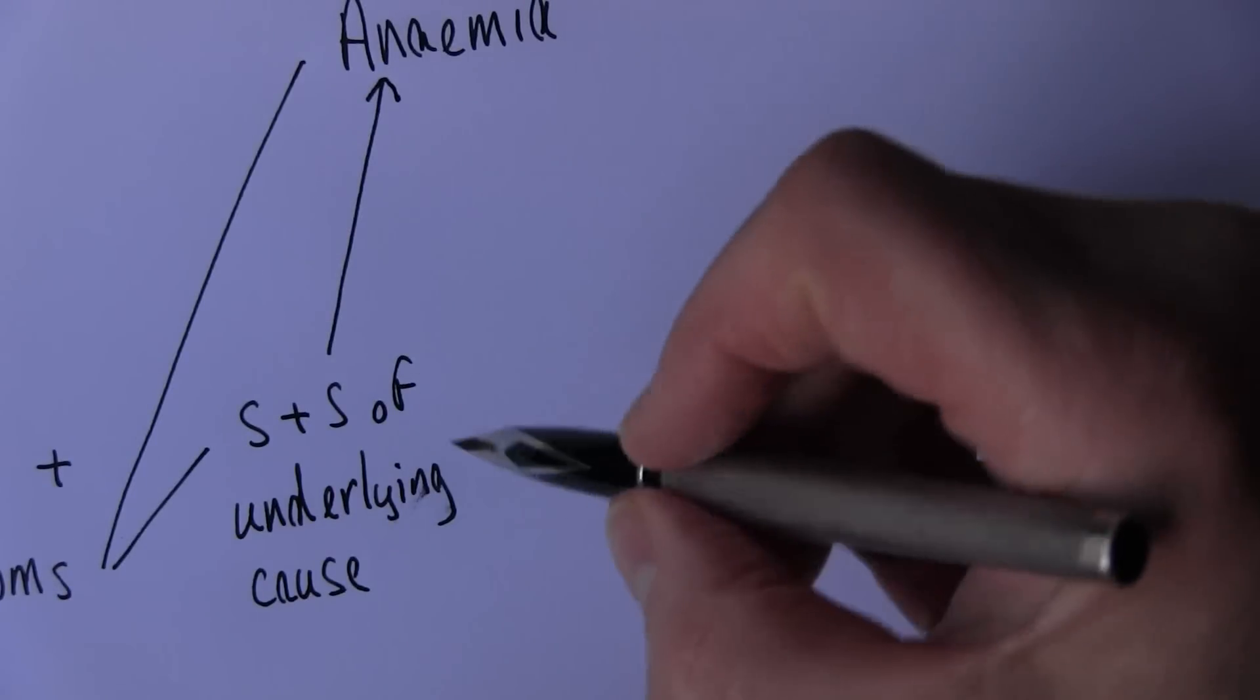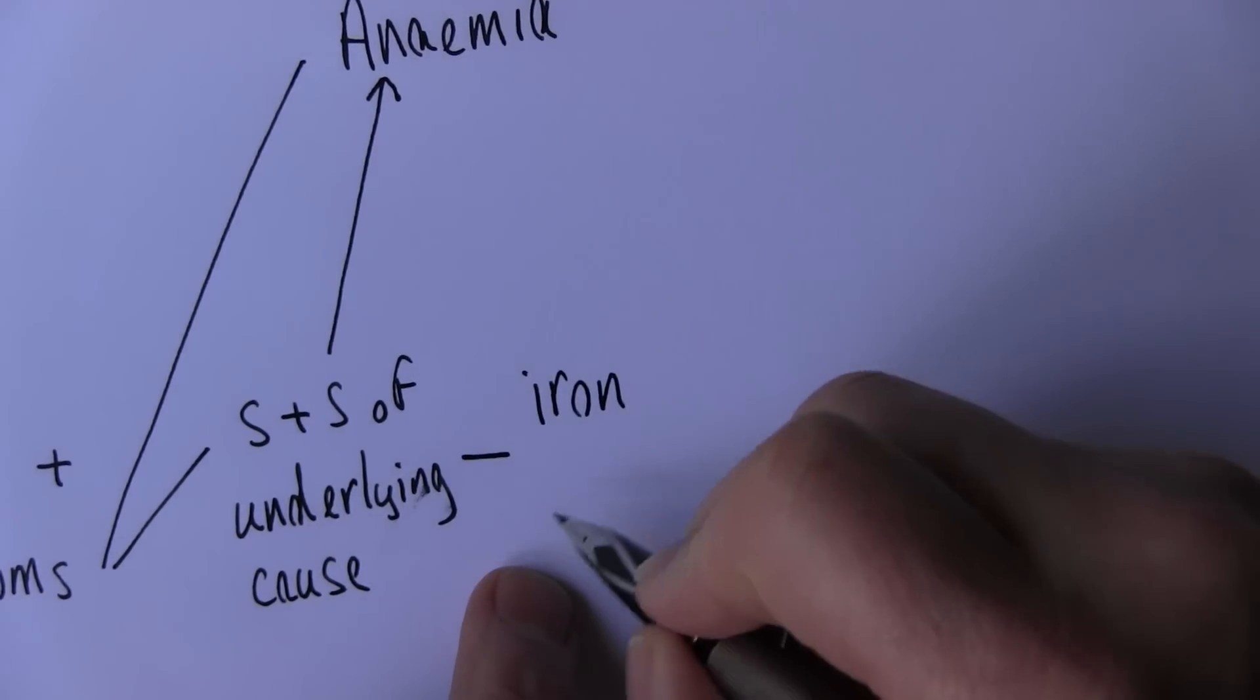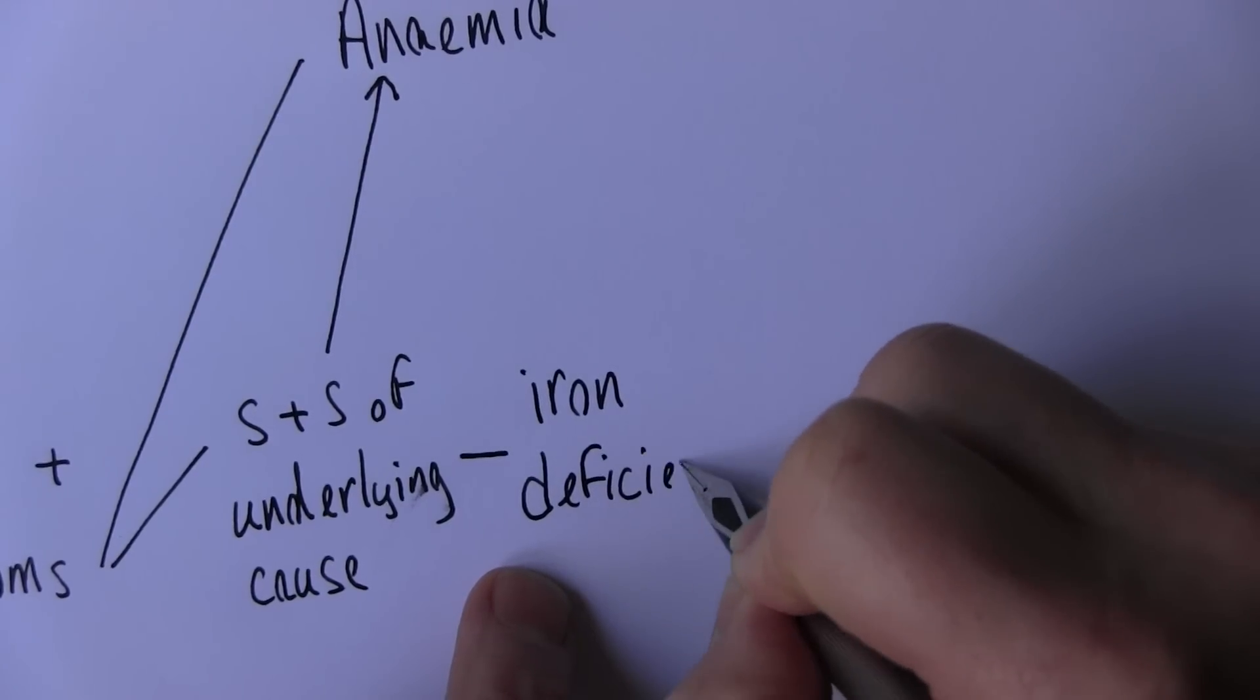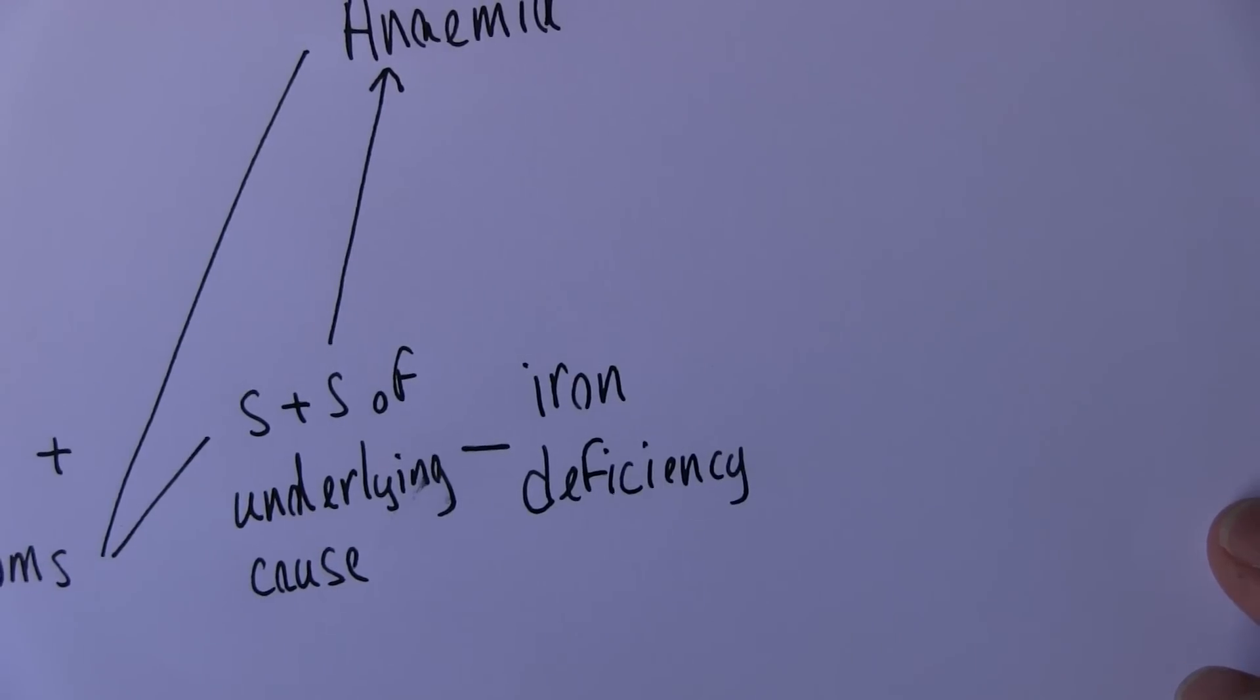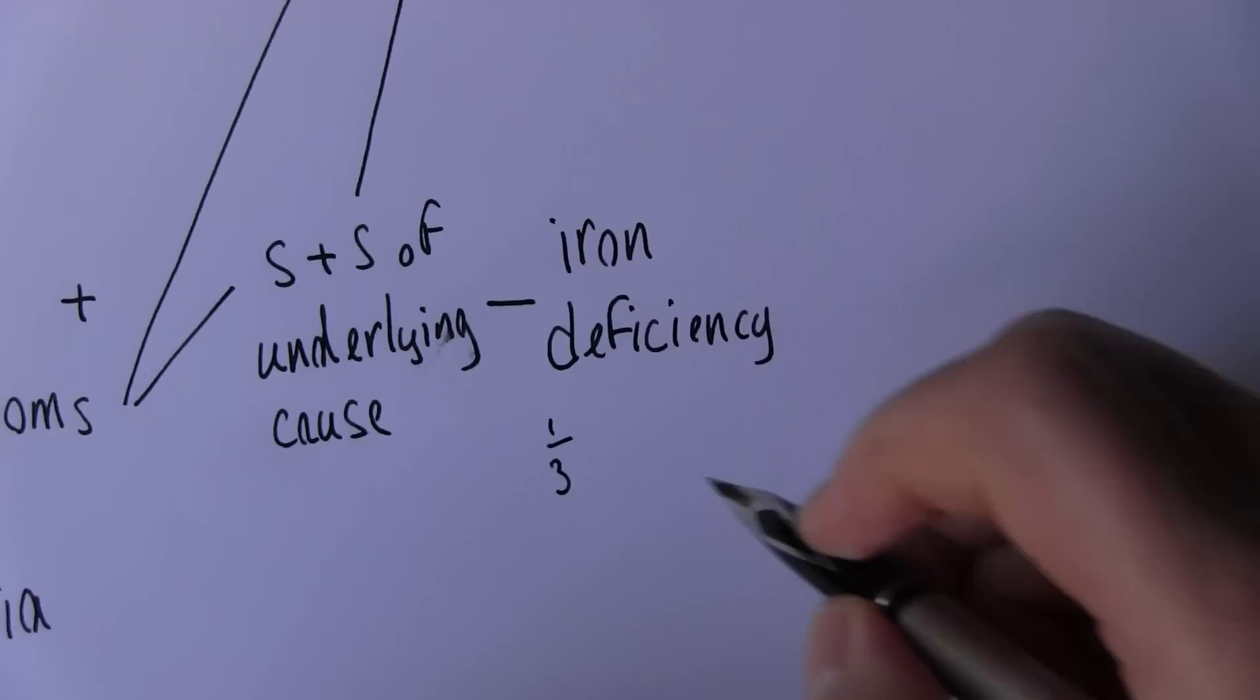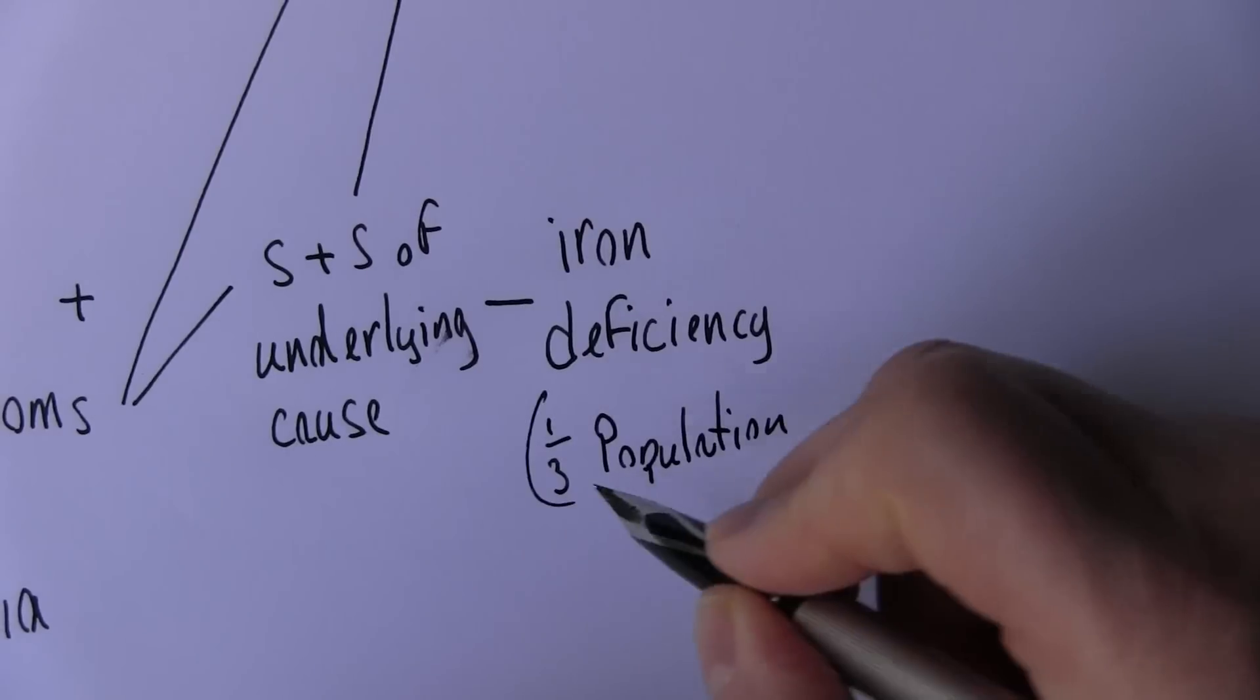And the main cause here that we're going to come across, or globally certainly the main cause of anemia, is iron deficiency. So iron deficiency is remarkably common. And the figures are hard to believe but true. About a third of the world's population have iron deficiency.